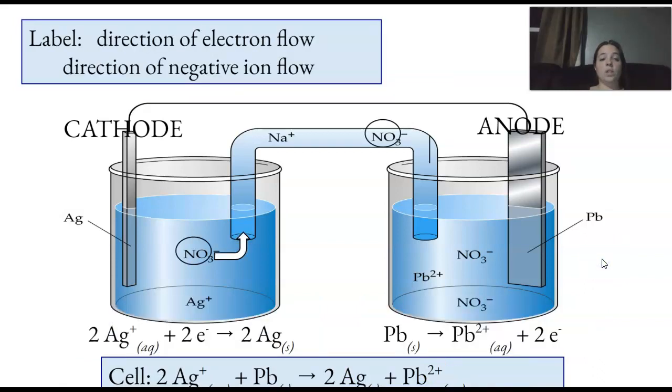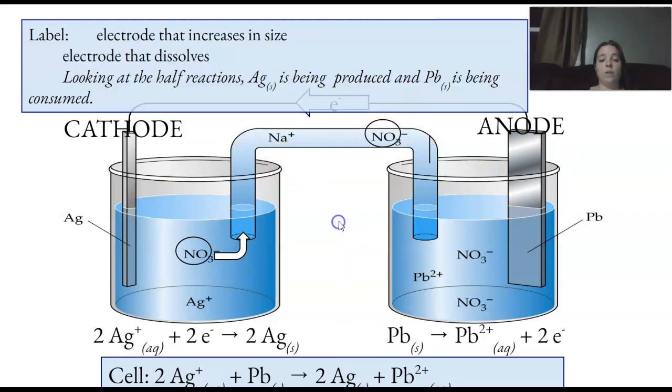Okay. Now, let's do the direction of the electron flow. It goes from the anode to the cathode. And then this goes up through here. Okay. Makes a nice little circuit. Goes in a circle.